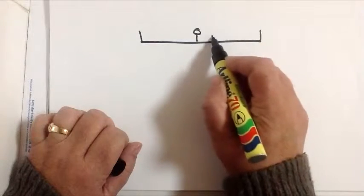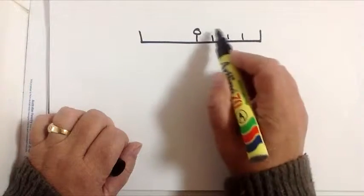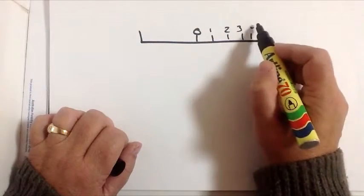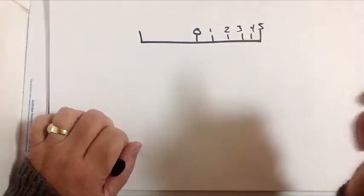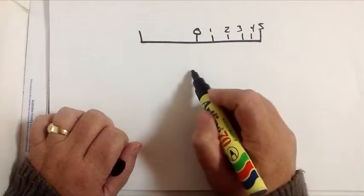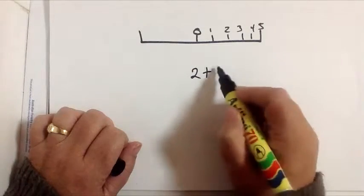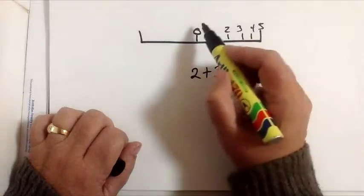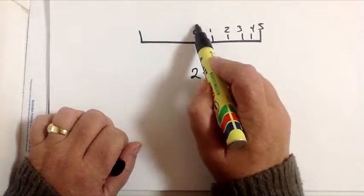So I'm just going to make this number line up to 5 and I'm going to do 2 plus 3. So I'm going to use the number line to show how to do that. So I'd start at 0,